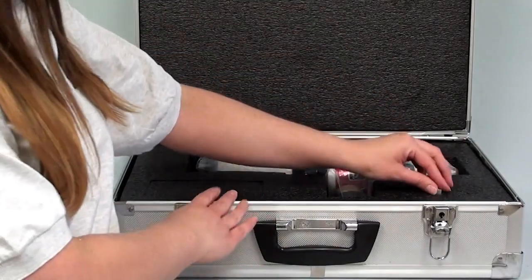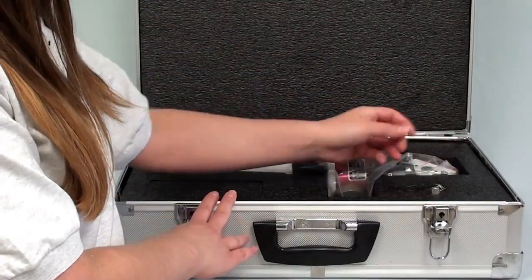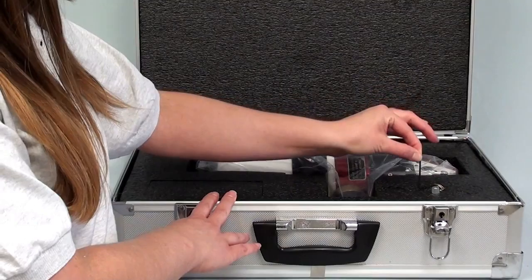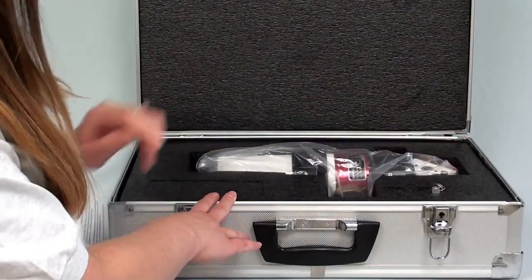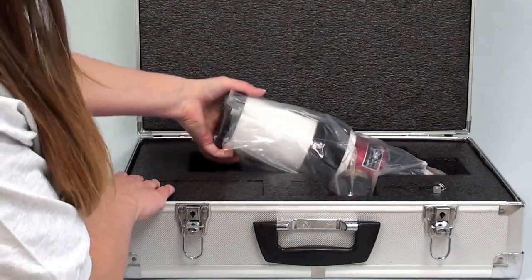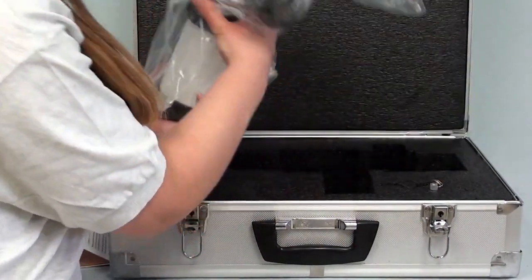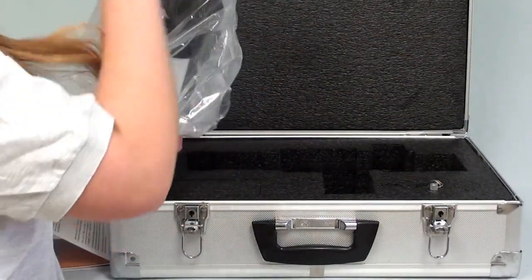Also in the case, you'll find a focuser locking screw, a 2mm hex wrench, and keys for your case. Now let's take out the 60 and have a look. You'll also receive it in a bag to protect it from any dust.